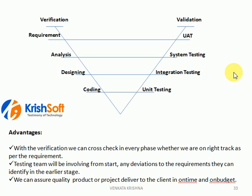When compared to waterfall and spiral models, what is the advantage here? Verification technique will be there. Testing team is involved in each phase of the project. That is the reason we easily identify mistakes, gaps, or deviations in the early phases of the project, and we can give assurance to the client that we are going to deliver 100% quality product and the right product on time.